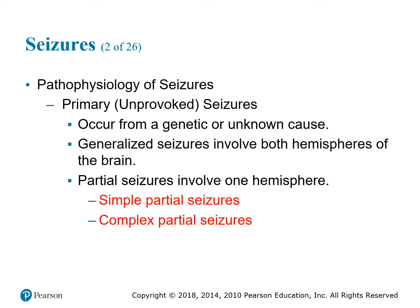With the pathophysiology of seizures, we have primary seizures, which are considered unprovoked. These generally are genetic in nature or have an unknown cause. Primary seizures are where epilepsy comes in — if somebody has recurrent seizures with no secondary cause, they may be diagnosed with epilepsy.